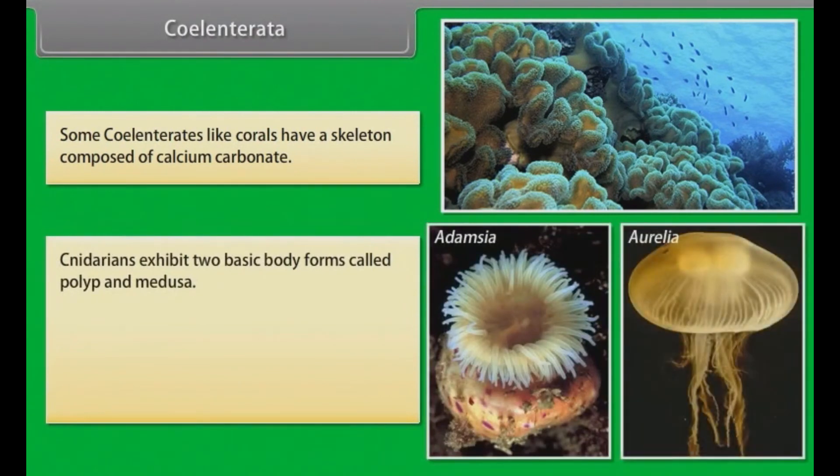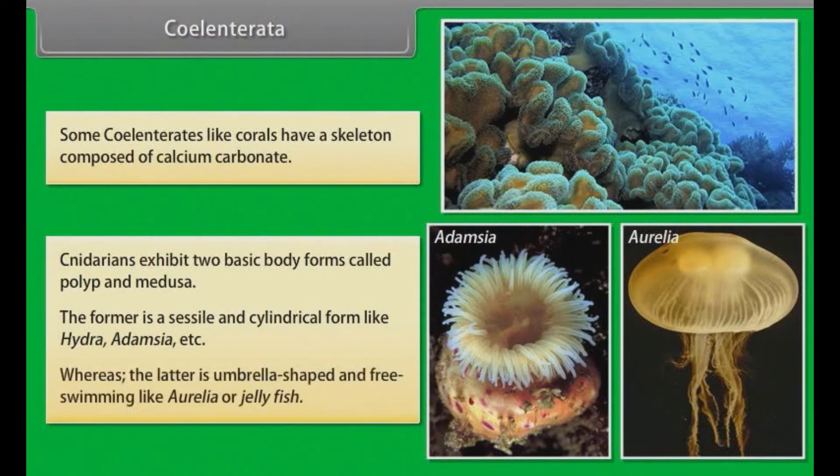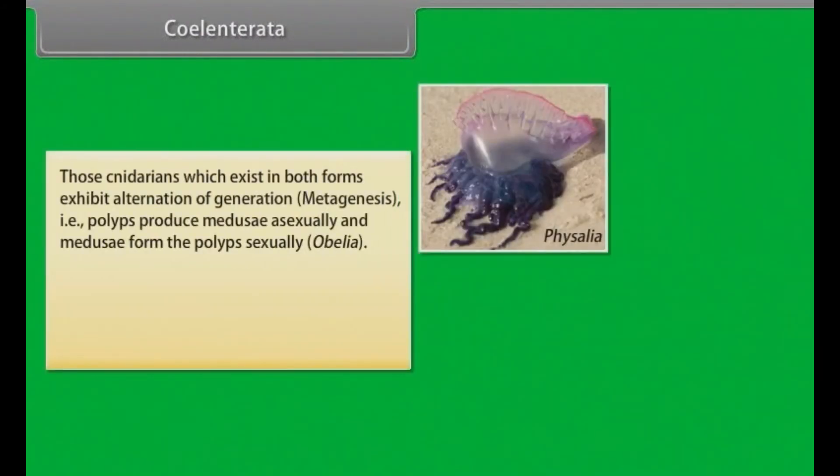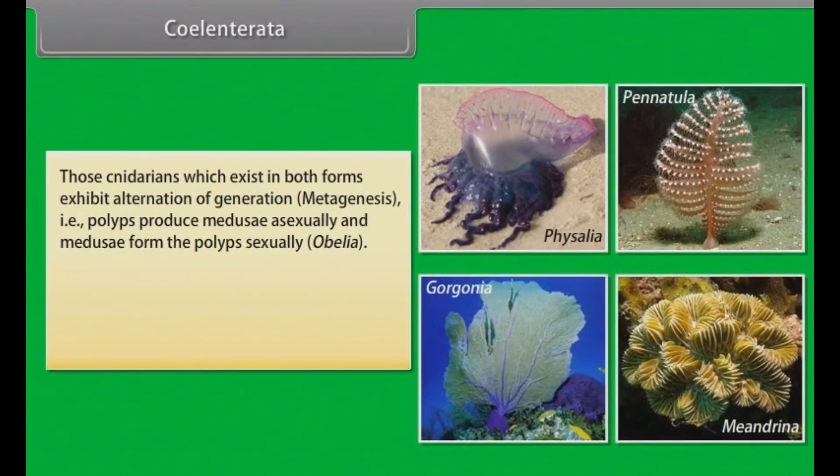Cniderians exhibit two basic body forms, called polyp and medusa. The former is a sessile and cylindrical form like hydra, adamsia, etc. Whereas, the latter is umbrella-shaped and free-swimming, like aurelia or jellyfish. Those cniderians which exist in both forms exhibit alternation of generation. Example, metagenesis, i.e. polyps produce medusae asexually and medusae form the polyps sexually. For example, Obelia.